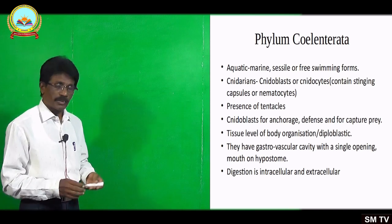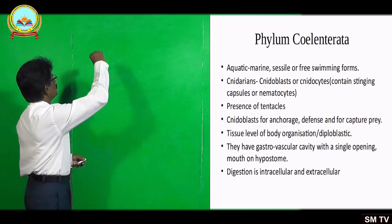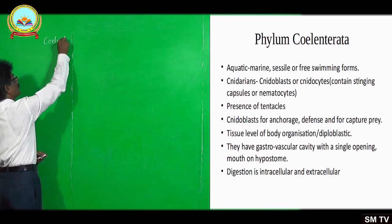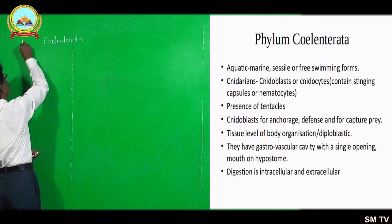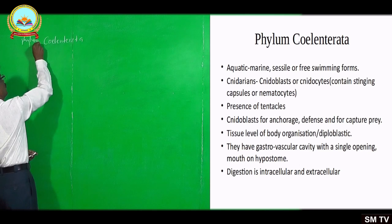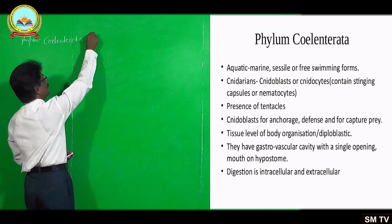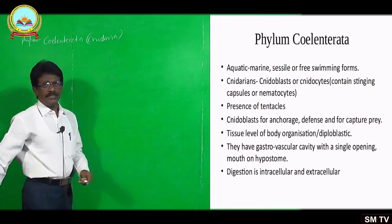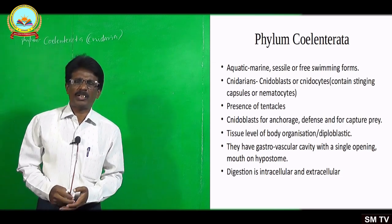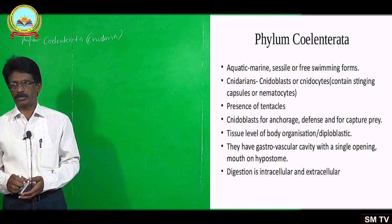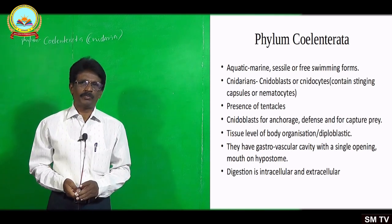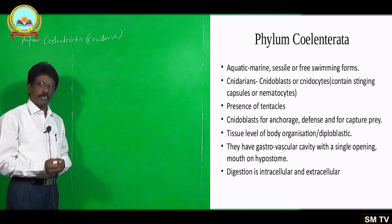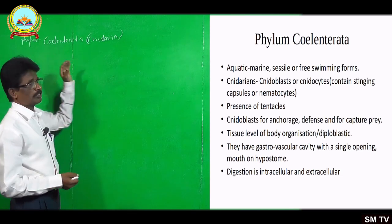I shall move on to one more phylum — the general characters of the phylum Coelenterata. The phylum Coelenterata is also known as Cnidaria. This phylum includes aquatic animals. They are all aquatic animals — mostly marine forms and few are freshwater forms. Based on the body nature of the animals, they may be called as coelenterates or cnidarians.